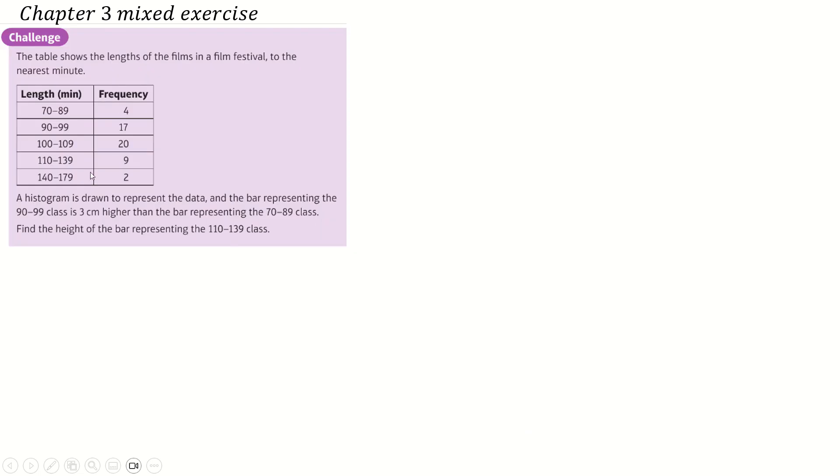Chapter three, mixed exercise about a histogram. I have done GCSE maths, so I can do histograms. I'm not too afraid of this question. Of course, the area in a histogram is the frequency. The height, therefore, if the area is 4 and the width is 20, the height is 0.2. And here, 1.7 by 10, height is 1.7. Now, that's good because that means apparently this bar is 3 centimetres higher than this bar, which means 1.5 on our scale is equal to 3 centimetres, which means 0.5 is equal to 1 centimetre.